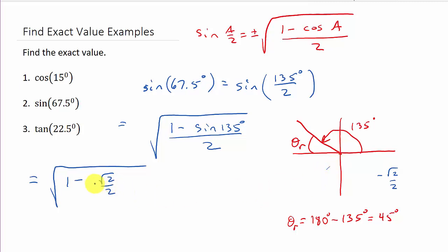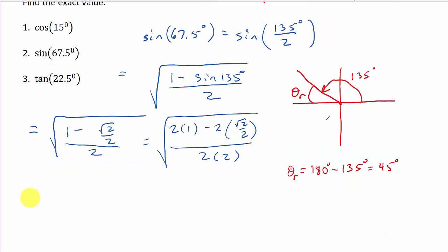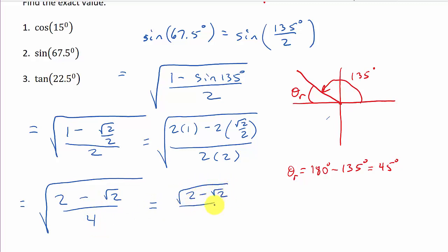Simplifying: we multiply each term by the common denominator 2, giving us 2 times 1 minus 2 times √2/2, over 2 times 2, which equals √(2 minus √2) over 4. Splitting the radical: square root of (2 minus √2) over square root of 4, which is square root of (2 minus √2) over 2. That's your answer.